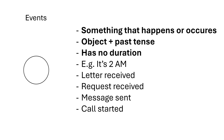What is an event? An event is something that happens or occurs, and the name of an event is always object plus past tense. For example: letter received, request received, message sent, call started, and so on. Importantly, an event has no duration — it just happens at a point in time. Receiving a letter, for instance, is a point in time, not a duration.